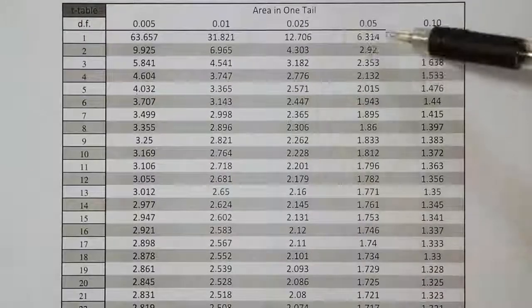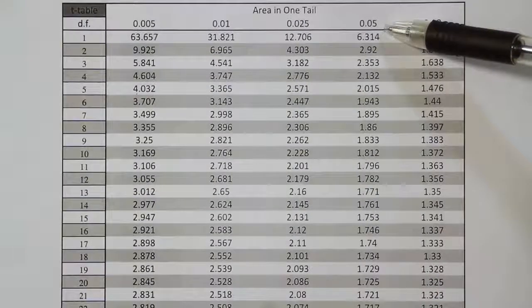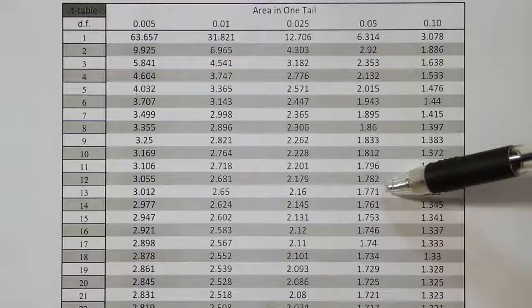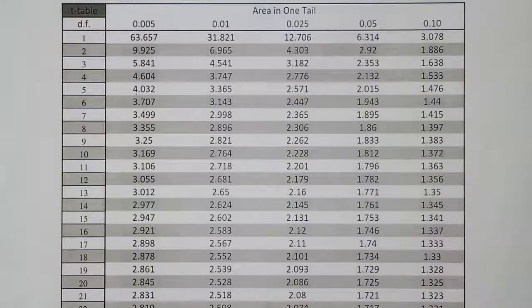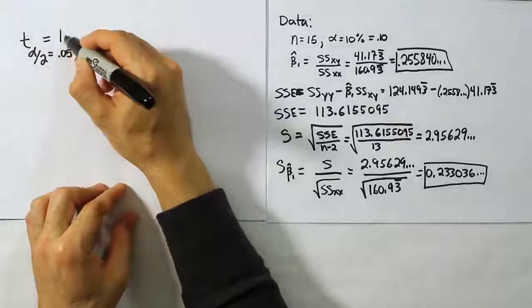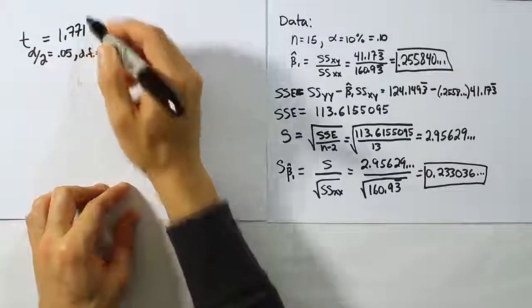So we're looking for 0.05 in one tail, and we're going to go down to degrees of freedom 13. So that's 1.771. We found our critical table value to be 1.771.